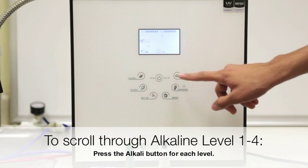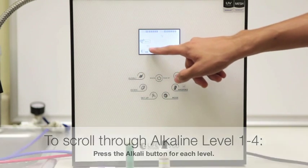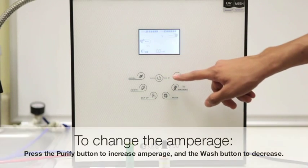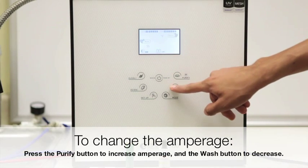You can adjust the amperage illustrated just below the mode word by pressing the purify for up and the washing for down.